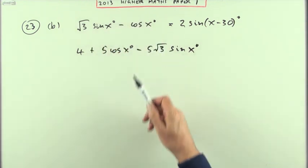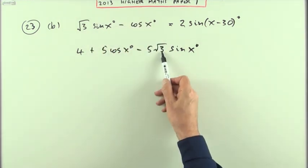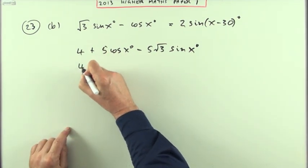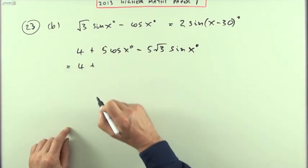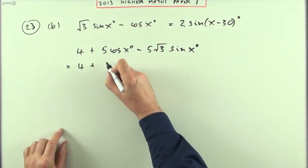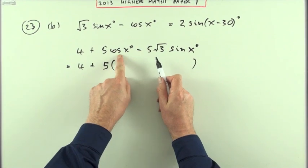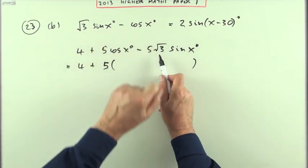It's part b, it must be related to part a. You're looking for this to appear somewhere, and you can see them in there, there's the root 3 and so on. There's this 5 that's additional to it. We'll just take the 5 out of it. That's the same as 4 plus 5 times, but notice when you do 5 times it you're left with cos minus root 3, which is opposite way around.